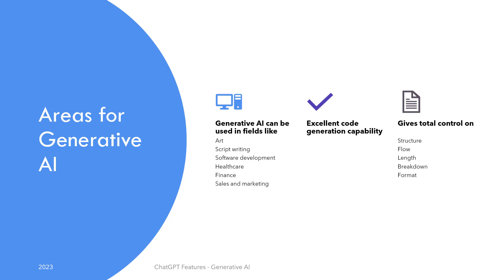ChatGPT has superb code generation capabilities built in, where it can generate software code on demand. This feature and many others have been covered in other videos in this series. Just note that you have total control of the structure, flow, length, breakdown, and format of the content that you generate. You can even generate content in the style of some other person — a capability also covered in a specific video in the series.